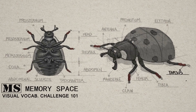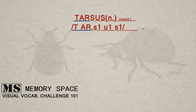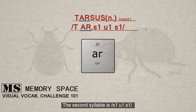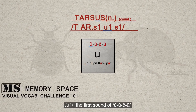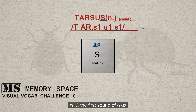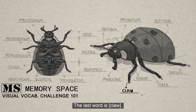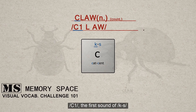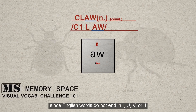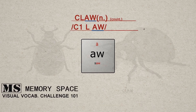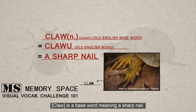The next word is tarsus. Tarsus has two syllables and the stress is at the first one. The first syllable is 'tar' — T, A-R controlled by R. The second syllable is 'sus' — S, the first sound, U the first sound of A-U-U-W, S. Tarsus is a base word meaning flat surface. The last word is claw: C-K the first sound of CK-S, then L-AW, which may be used at the end of English words since English words do not end in I, U, V, or J. It uses CK because it is followed by L, not E, I, or Y. Claw is a base word meaning a sharp nail.